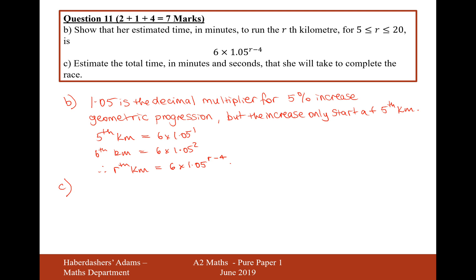Moving on to part C. Estimate the total time in minutes and seconds that she will take to complete the race. What we're going to be doing here is add the 24 on at the end, and then we can say that this is a geometric series.